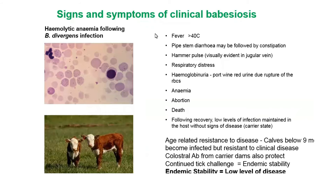Signs of red water fever include fever up to and above 40°C, pipe-stem diarrhea typically followed by constipation, a hammer pulse in the jugular vein, respiratory distress, haemoglobinaemia, port-wine coloured red urine, and anaemia. There may also be abortion and potentially death.